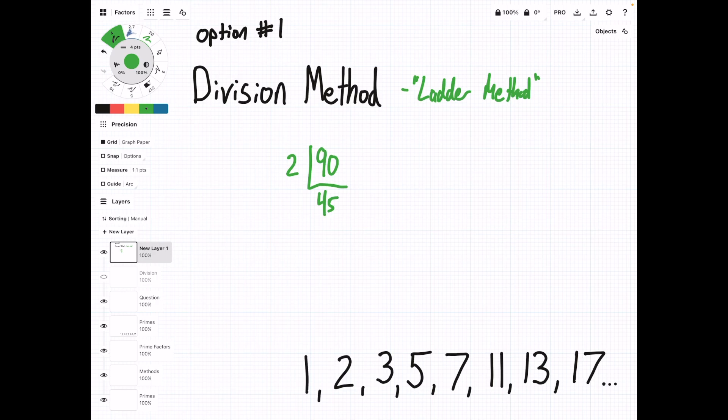Then you ask yourself, can I divide 45 by 2 and get no remainder? In this case, we can't. 45 divided by 2 is going to give us 22.5. So anytime you have a remainder, that's a no-go. So then if you can't divide without a remainder, you move on to the next number. So this is going to be 3. 45 divided by 3 is 15. And then you say, can I divide by 3 again? And the answer is yes. So you get 5.